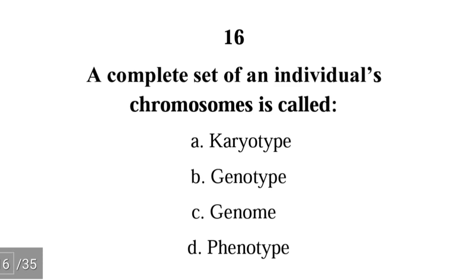Number sixteen: a complete set of an individual's chromosomes is called — karyotype, genotype, genome, or phenotype. The correct answer is A, karyotype. The karyotype refers to all your chromosomes from the first pair to the 23rd pair.